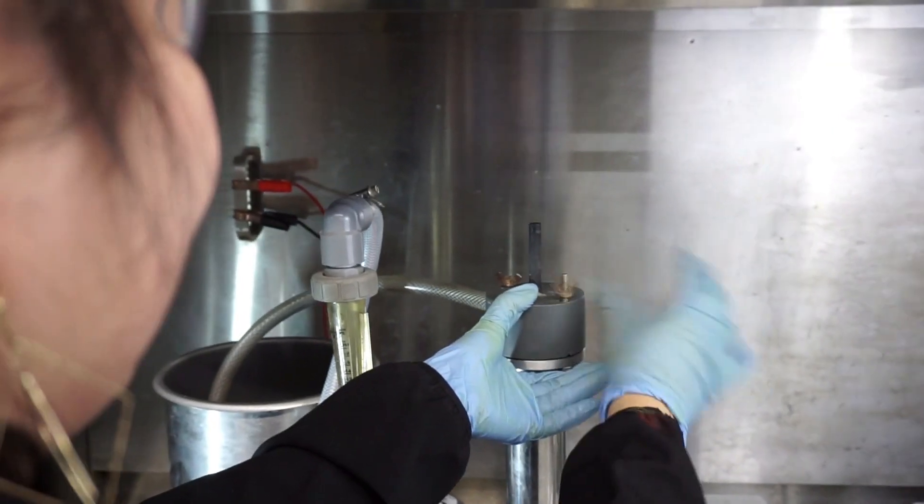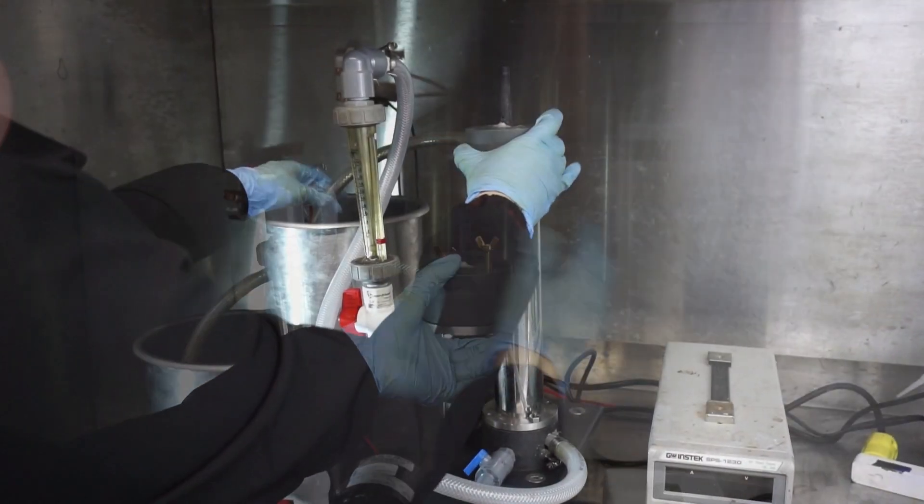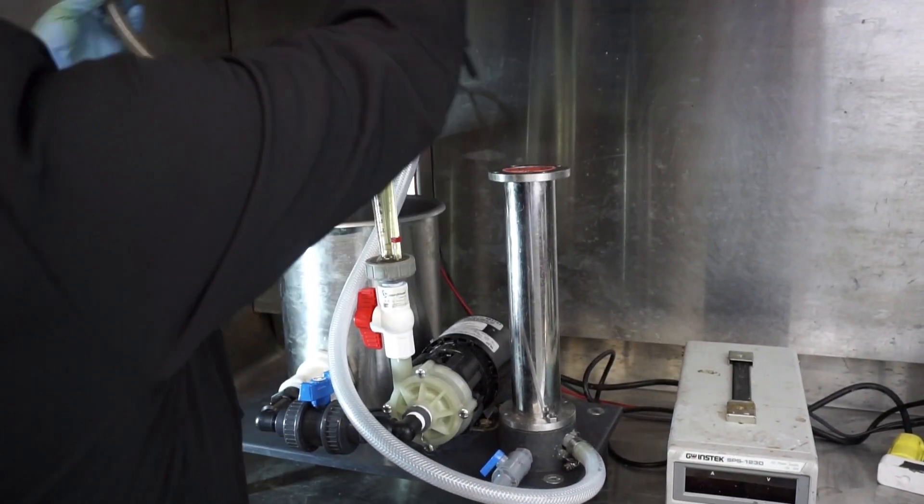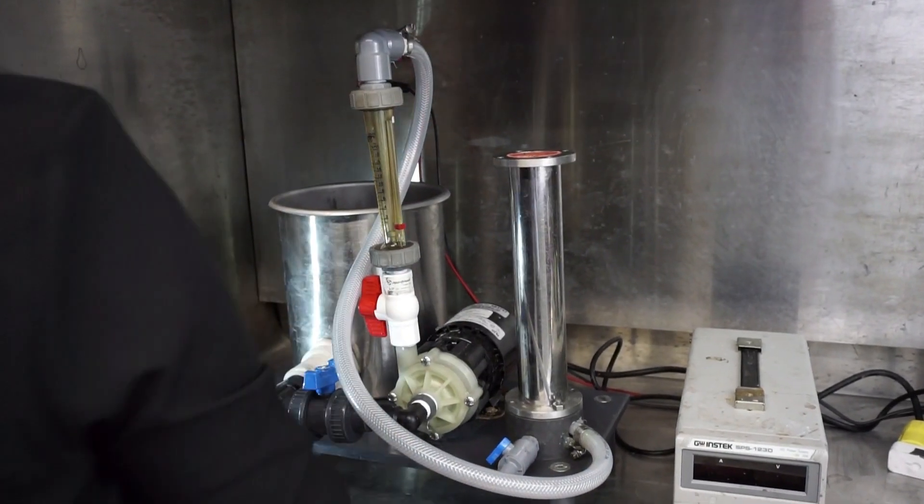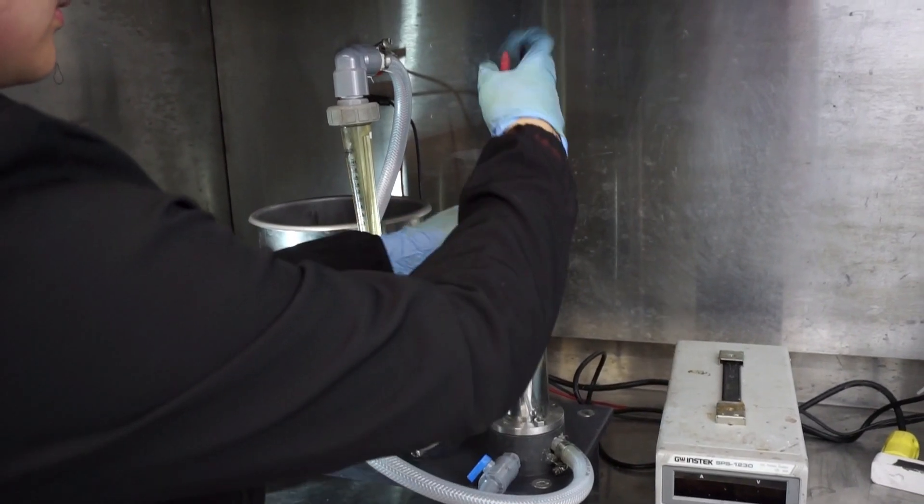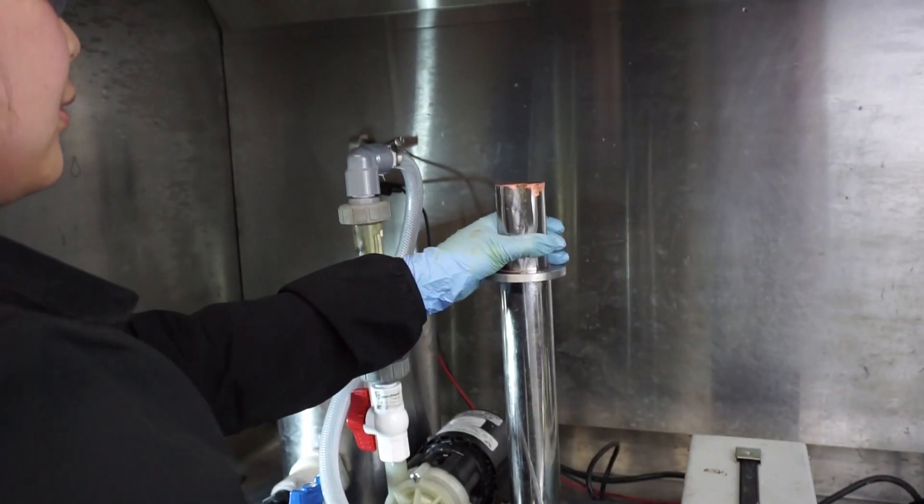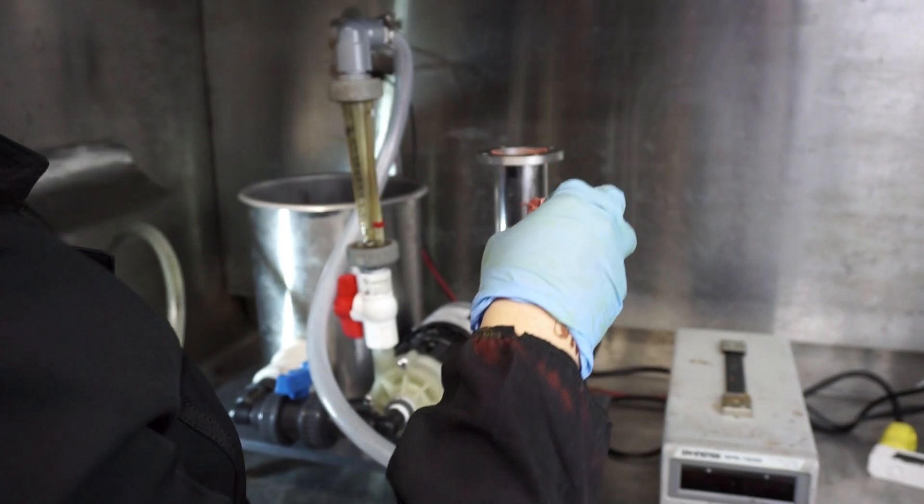After a given period of time with the current applied, the harvest begins. The rectifier is first switched off, followed by the pump. The system is partially drained, the upper end cap removed, and the starter sheet lifted out to reveal a brilliant high purity copper cathode.